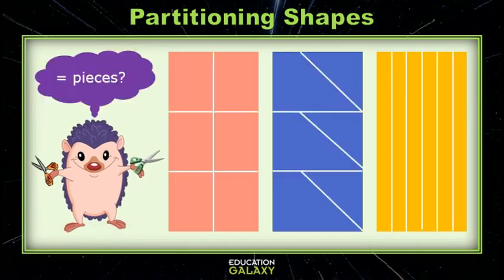Are the pieces equal? Well, I see that this pink one was cut into six equal parts so it represents one-sixth and the yellow one is cut into six equal parts so it represents one-sixth but this blue one was not cut into equal parts so you cannot say that each piece is one-sixth of the original.